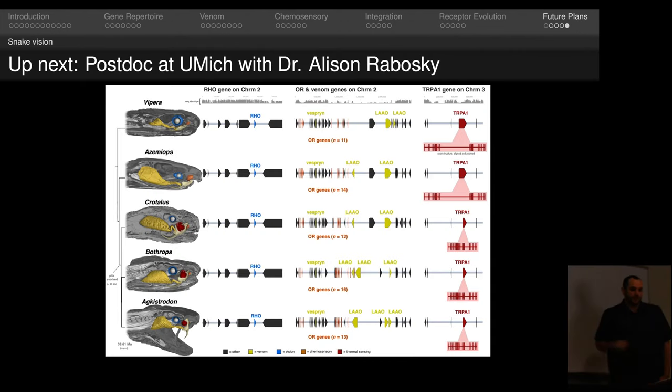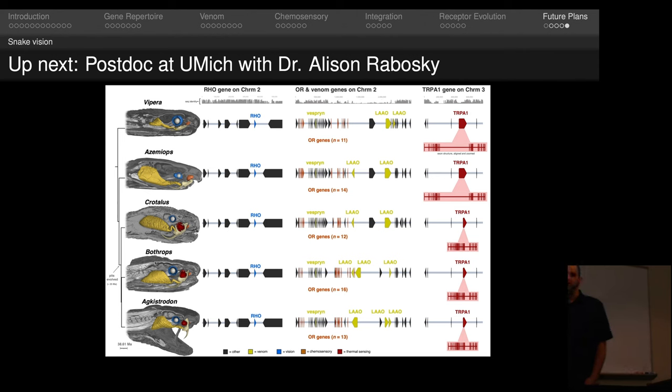Up next for me, I have a postdoc appointment lined up at the University of Michigan working with Dr. Allison Rabosky. Working with her, the plan is to basically supplement the genomic stuff that I've been doing in the sensory evolution of snakes, but then pairing it with high-resolution CT scanning morphology and trying to pair the two together to look at the evolution of the genome with the evolution of the morphology in the head. So I'm really excited to start that.